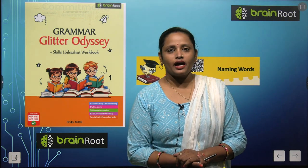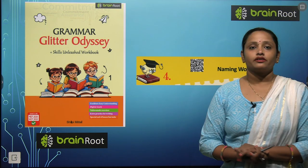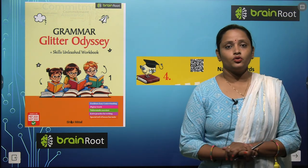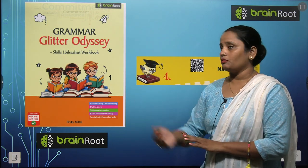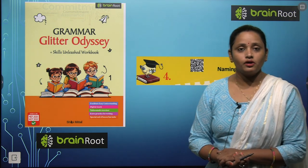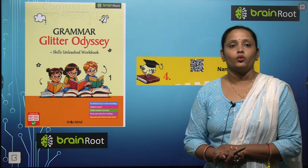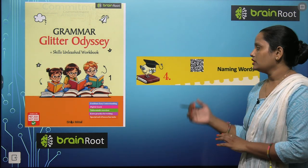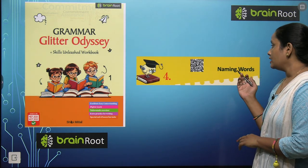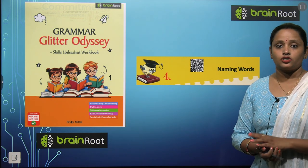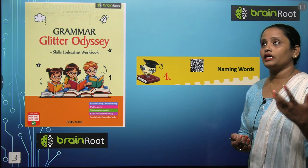Hello my dear kids, welcome back. I am Vandana and we are learning English grammar by the Brainroot series. This is your book — Grammar Glitter Odyssey, Book 1. Today we are going to start with Chapter 4, and the name is Naming Words. In this chapter we are going to learn about different naming words.